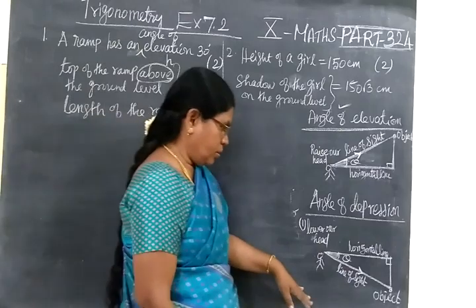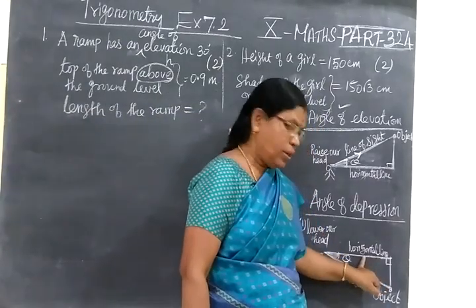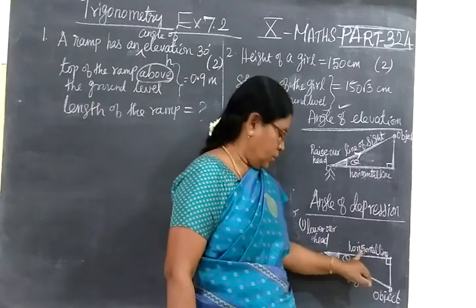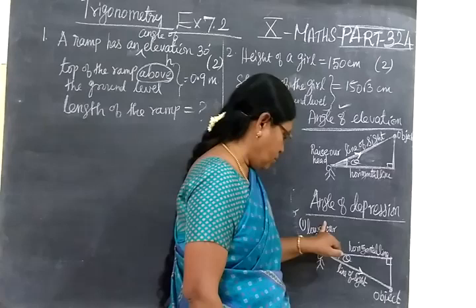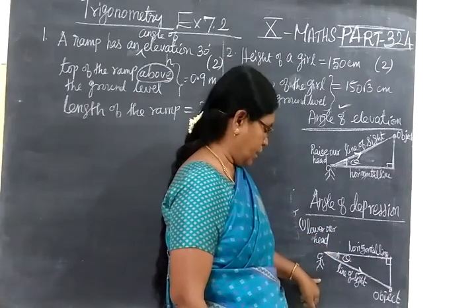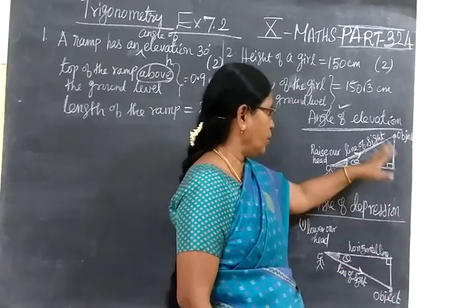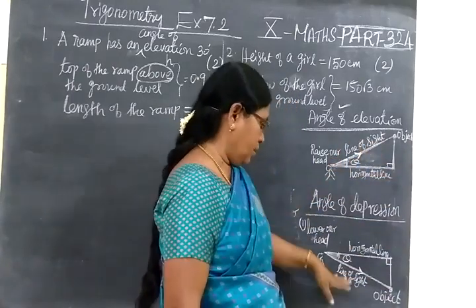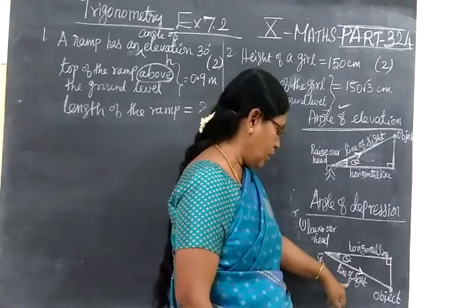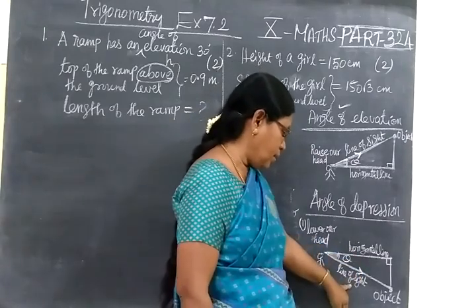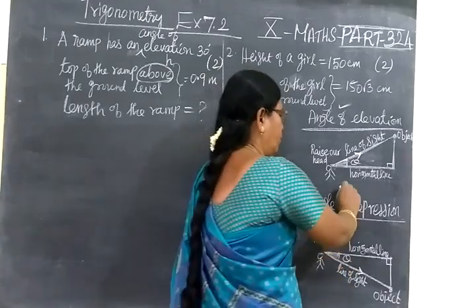Similarly, the same concept but in opposite. The object is below the horizontal line. If she sees the object, she has to lower the head and see the object. So above the ground level means raising the head. Below the ground level means lowering the head. Here also, the angle between horizontal line and the line of sight is known as angle of depression.